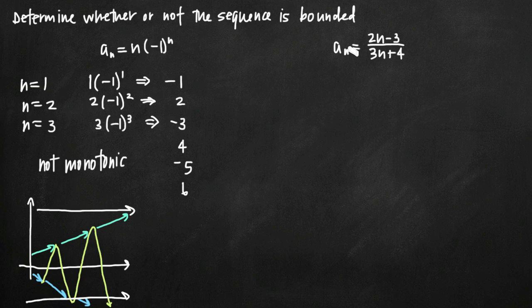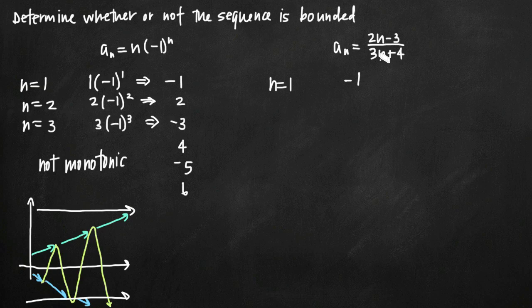Now for the second example, a sub n equals 2n minus 3 divided by 3n plus 4. We want to figure out whether the sequence is increasing or decreasing and therefore whether it is monotonic. Plugging in n equals 1, we get 2 times 1 minus 3 over 3 times 1 plus 4, which is negative 1 over 7, or negative 1 seventh. Plugging in n equals 2, in the numerator we get 4 minus 3 equals 1, and in the denominator we get 6 plus 4 equals 10, giving us positive 1 tenth.